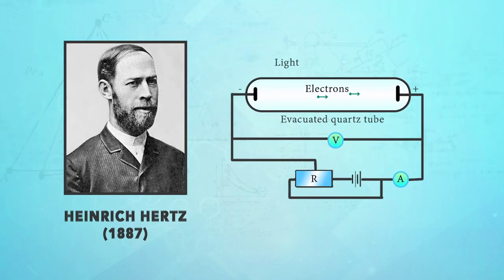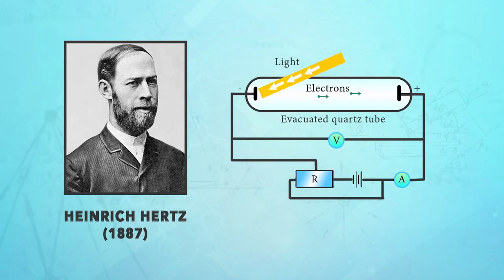In 1887, Heinrich Hertz observed that when ultraviolet light shines on two metal electrodes with voltage applied across them, the voltage at which the sparking takes place changes.